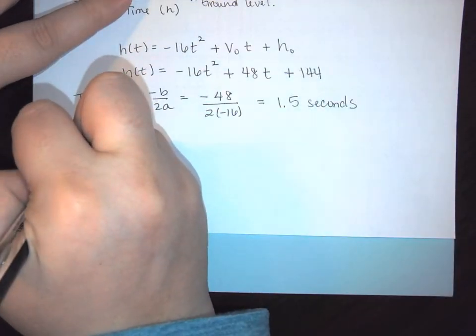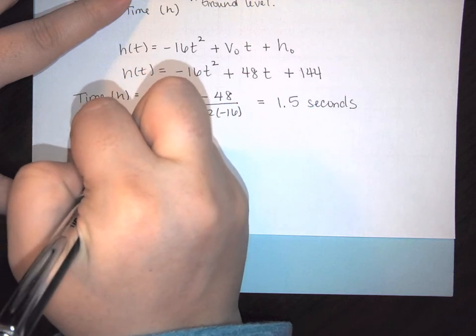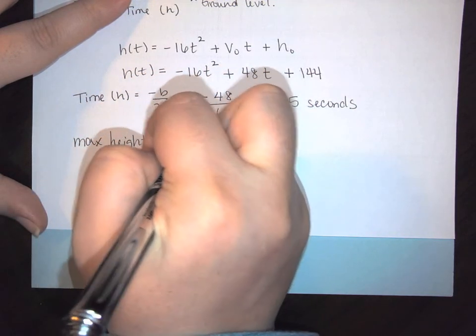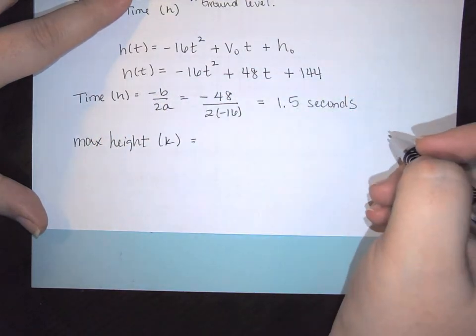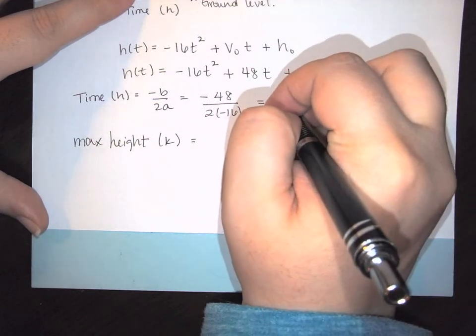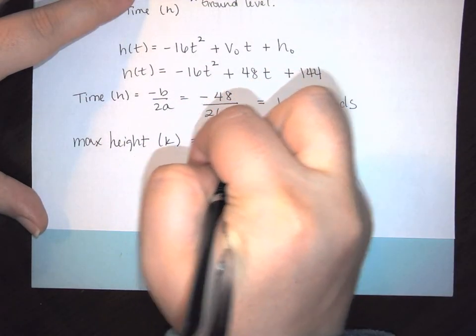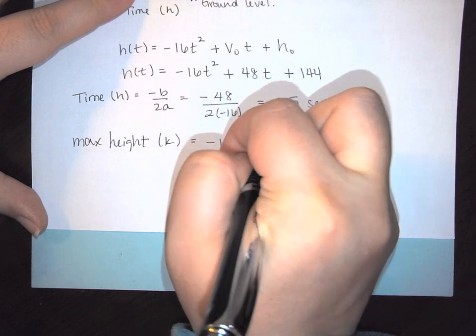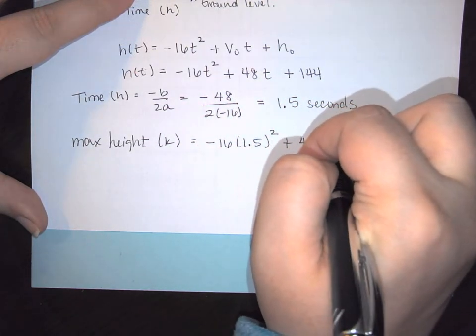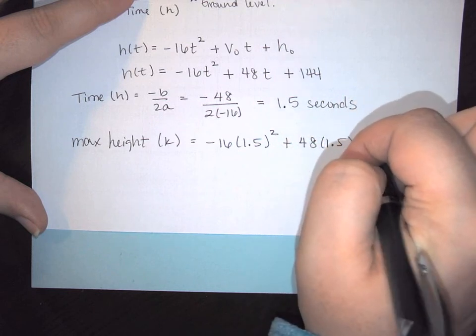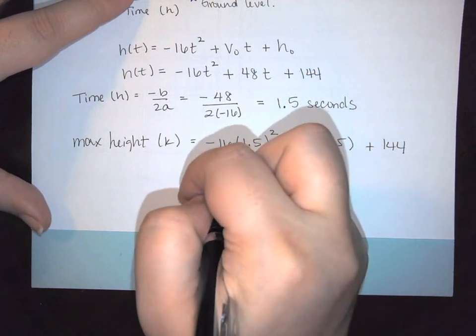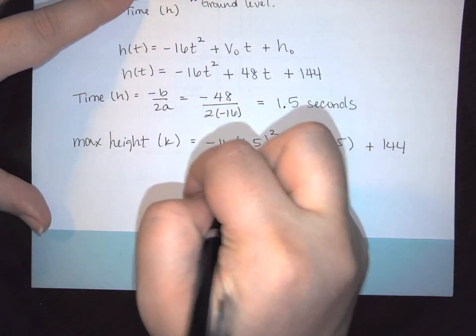And then we have your maximum height, which is the k value. And so in this case it's going to be found by taking our 1.5 seconds and substituting it in. So this is negative 16 times my 1.5 squared plus 48 times the 1.5 plus 144. So when we simplify that down we come up with 180 feet.